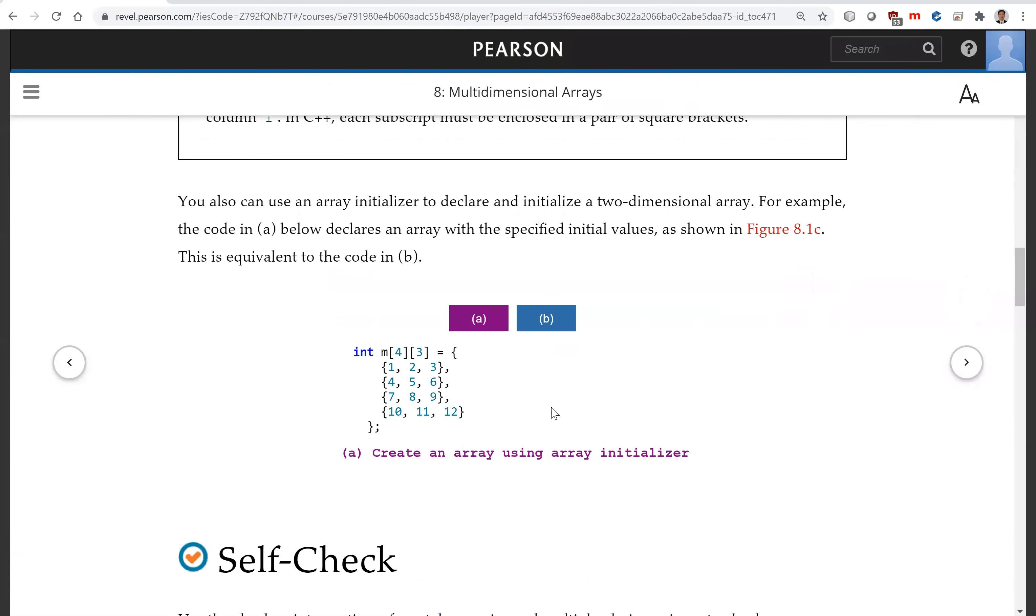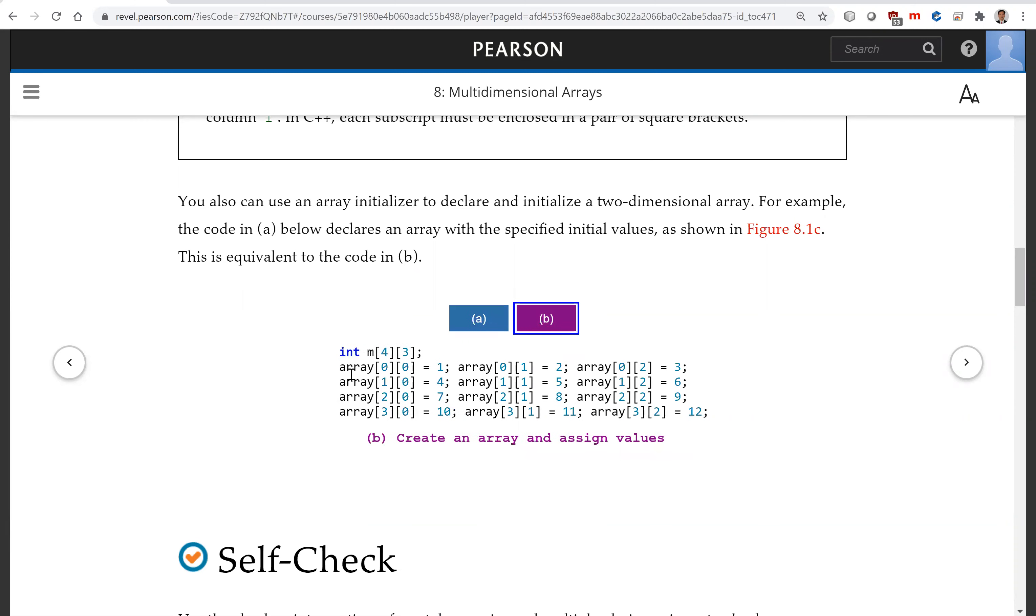You can also use an array initializer to initialize a two-dimensional array. So this is four rows and each row has three columns—this is how you assign it. This is very clear, simpler than using this alternative.